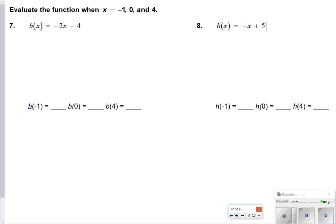For number 7, it says evaluate the function when you have negative 1, 0, and 4. So basically what you're doing is you're just plugging in each of those values. So negative 2 times negative 1, minus 4. Negative 2 times 0, minus 4. Negative 2 times 4, minus 4. When I start to solve these, the first one I get 2, minus 4, which is equal to negative 2. The next one I want to have 0. That one's going to be 0, minus 4, which is equal to negative 4. And then the next one I'll have negative 8, minus 4, which is equal to negative 12.